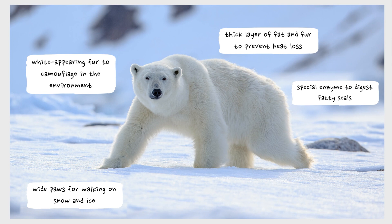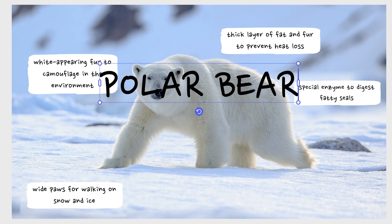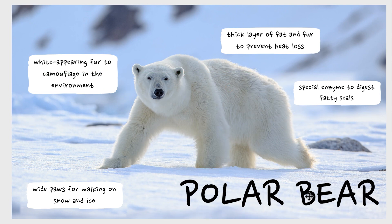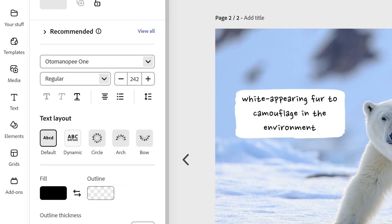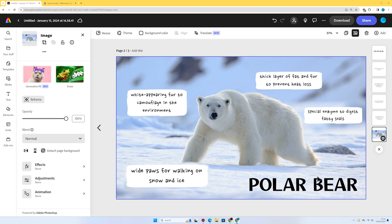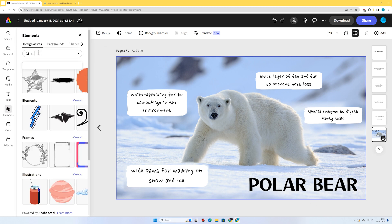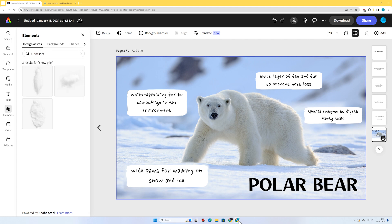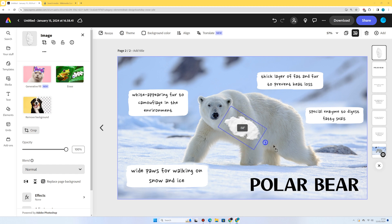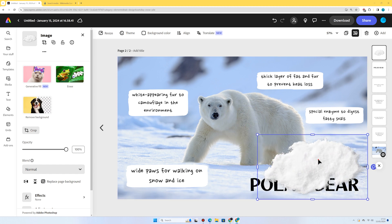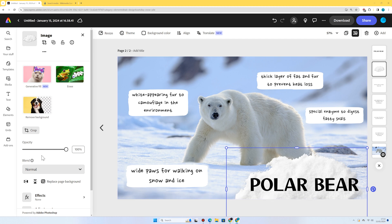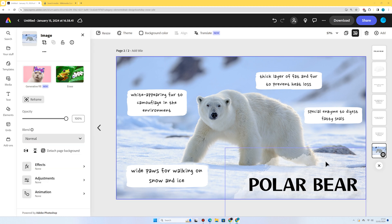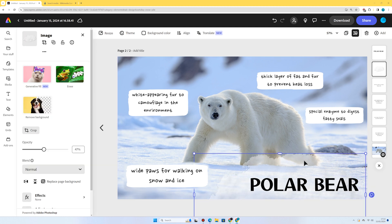I'm going to add a title — 'Polar Bear' — and place it down here so it stands out nicely. I'll choose a nice font from the font list. Now I'm going to go to Elements, search for the snow pile again, and choose one of the other elements. I'll click it, rotate it 90 degrees, and size it to roughly match my title. Then I'll place it over the title, drag it down in the Layers panel underneath the title, and reduce the opacity slightly so it just has that subtle snowy effect.